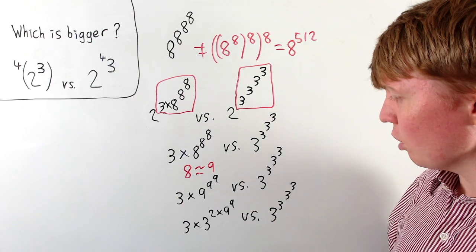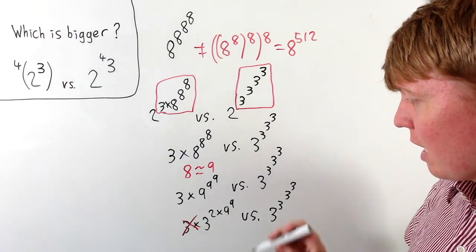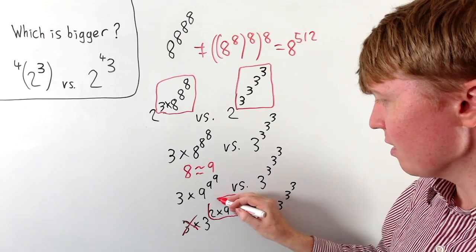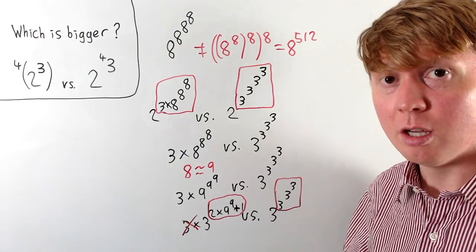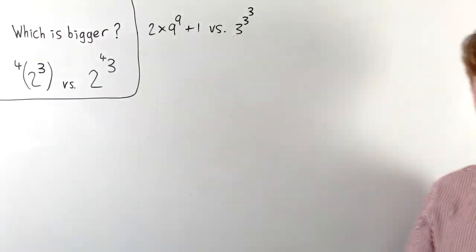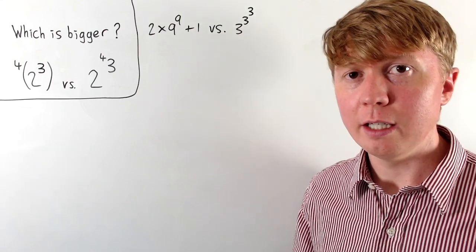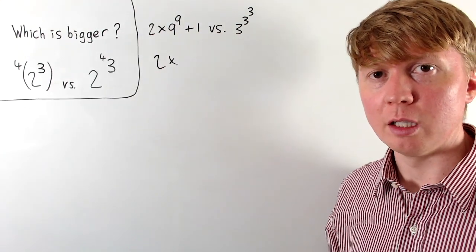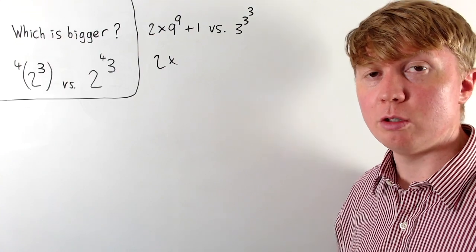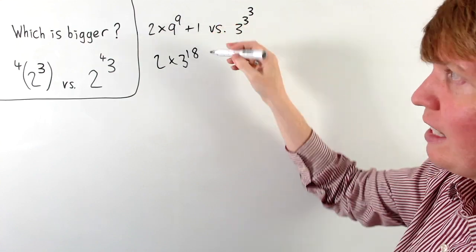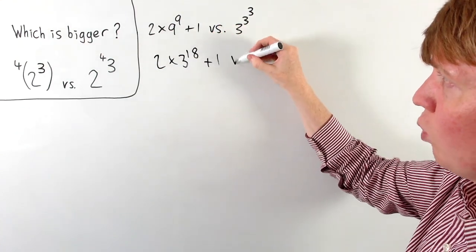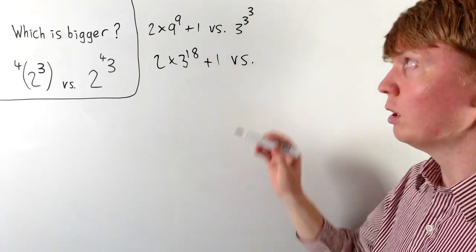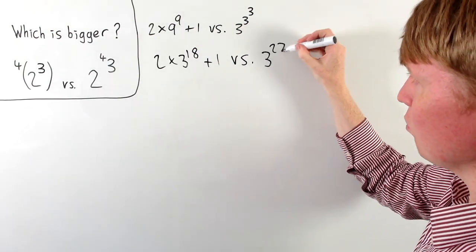We can take the 3 on the outside into the power, making it a power of 2 times 9 to the 9 plus 1 on the left, compared to the tetration of order 3 on the right. Using the fact that 9 is 3 squared, we rewrite the left as 2 times 3 squared to the power of 9, which by laws of indices gives 3 to the power of 18. We still add 1. On the right, evaluating top-down: 3 to the power of 3 is 27, so the right becomes 3 to the power of 27.